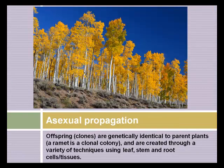Asexual propagation occurs widely in nature. Some plants spread themselves mainly through asexual propagation. Most plants also produce seeds, but some plants like aspens will spread their colonies over very wide areas. This colony is called a ramet, and each one of these trees is a clone — it's identical in its genetic makeup to the parent plants, created through suckering and underground rhizomes.